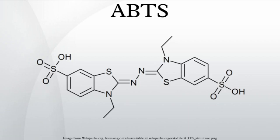In biochemistry, 2,2-Azino-bis 3-ethylbenzodiazolin-6-sulfonic acid, or ABTS, is a chemical compound used to observe the reaction kinetics of specific enzymes. A common use for it is in the enzyme-linked immunosorbent assay to detect the binding of molecules to each other.